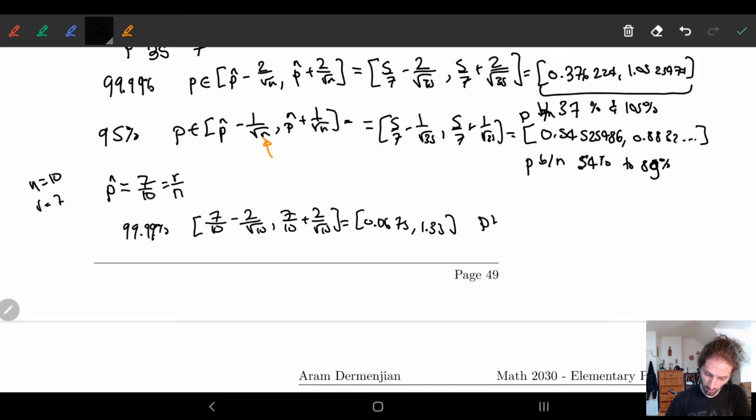We know p is between 6% and 133% with 99.9%. So we're really confident it's there.